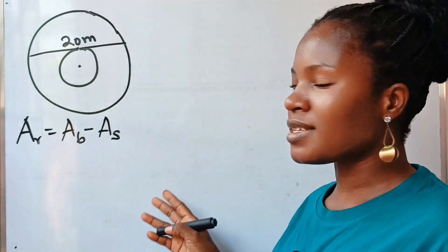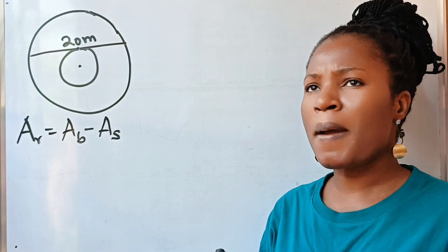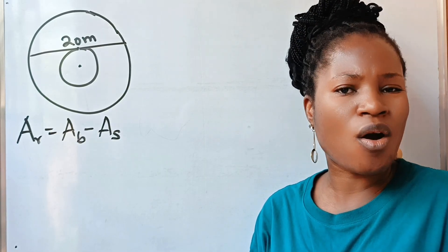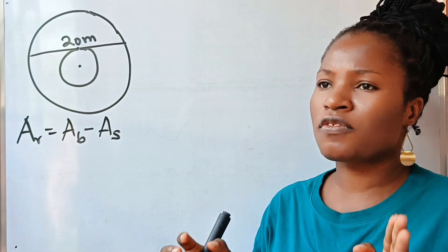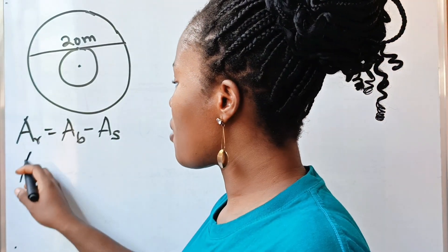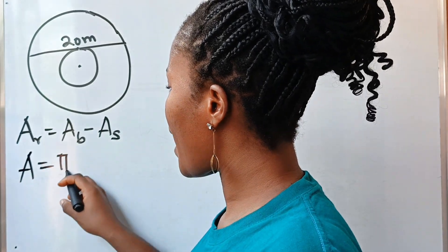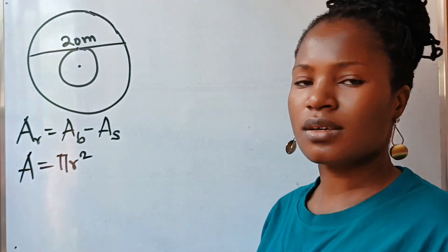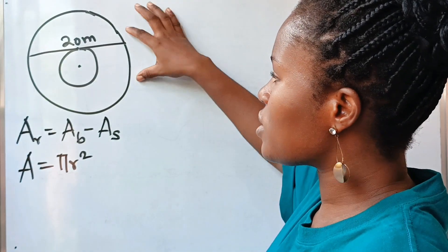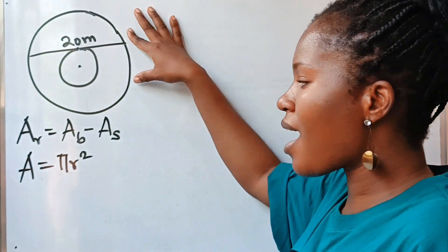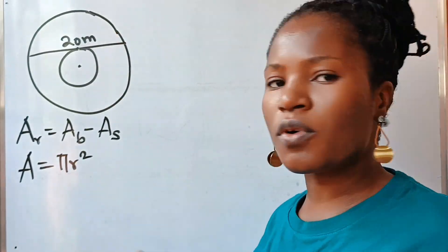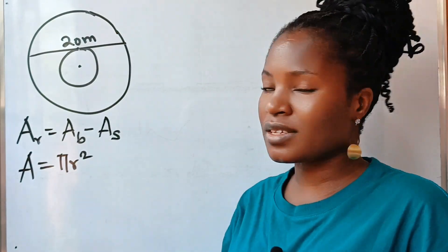Now secondly, remember, let's recall the formula for finding the area of a circle. The formula for the area of a circle is: area is equal to π r squared. So it simply means that if we can figure out the radius of the big circle and the radius of the small circle, then we will find the area because π is constant.